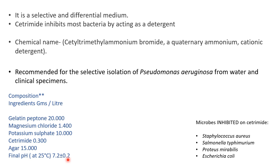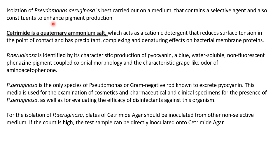The microbes which are inhibited on cetrimide agar include Staphylococcus aureus, Salmonella typhimurium, Proteus mirabilis, and E. coli. The isolation of Pseudomonas aeruginosa is best carried out on a medium that contains a selective agent like cetrimide and also some components to enhance pigment production.